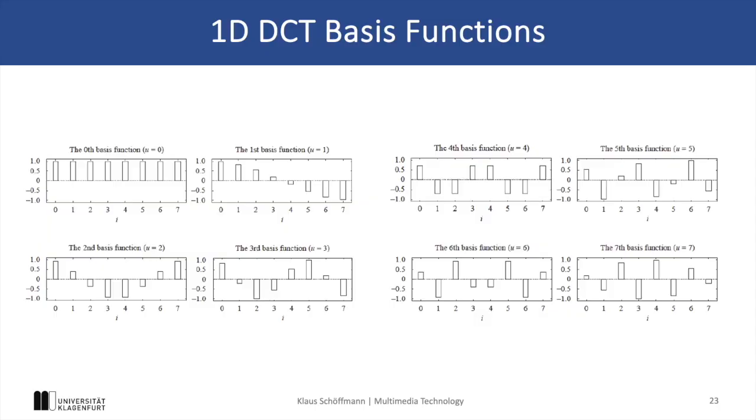Now over the next few slides we can see the DCT basis functions for the different coefficients of this 1D example, showing us the factors that are used for the different input values in order to compute a specific coefficient. We can also easily see here that the DC coefficient uses 1 as a factor for every value, while the first AC coefficient uses decreasing positive factors for the first four values and symmetric increasing negative factors for the next four values. This results in the difference between the first group of four values and the second group of four values.